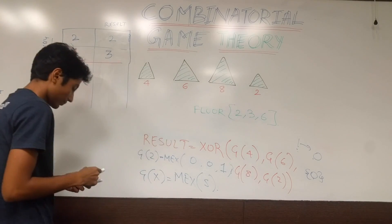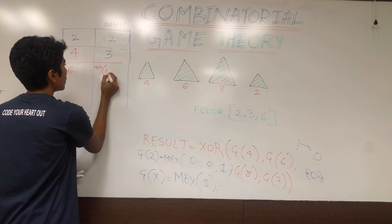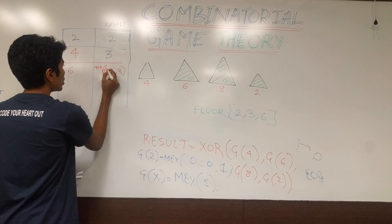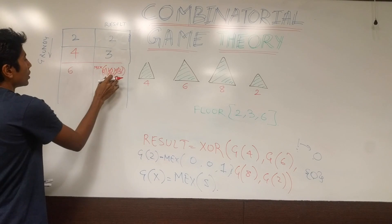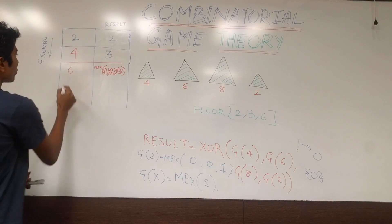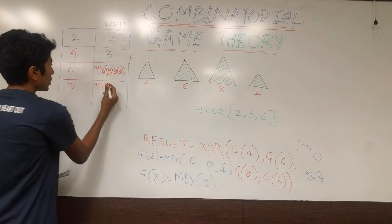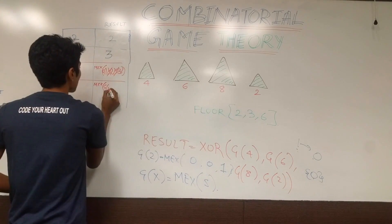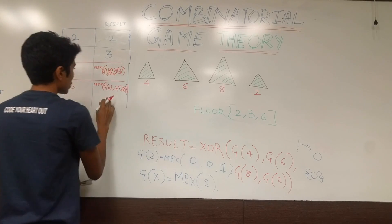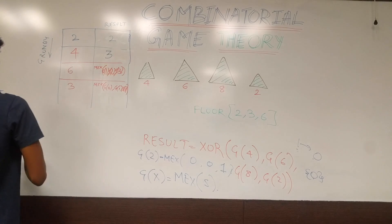For Grundy(6): floor(6/6)=1, floor(6/3)=2, floor(6/2)=3. So we need Grundy(1)=1, Grundy(2)=2, and Grundy(3). Computing Grundy(3): floor(3/6)=0, floor(3/3)=1, floor(3/2)=1. So mex of {Grundy(0), Grundy(1), Grundy(1)} = mex of {0, 1, 1} = 2. Grundy(3) = 2. Therefore Grundy(6) = mex of {1, 2, 2} — wait, mex of {Grundy(1), Grundy(2), Grundy(3)} = mex of {1, 2, 2} = 0. So Grundy(6) = 0.